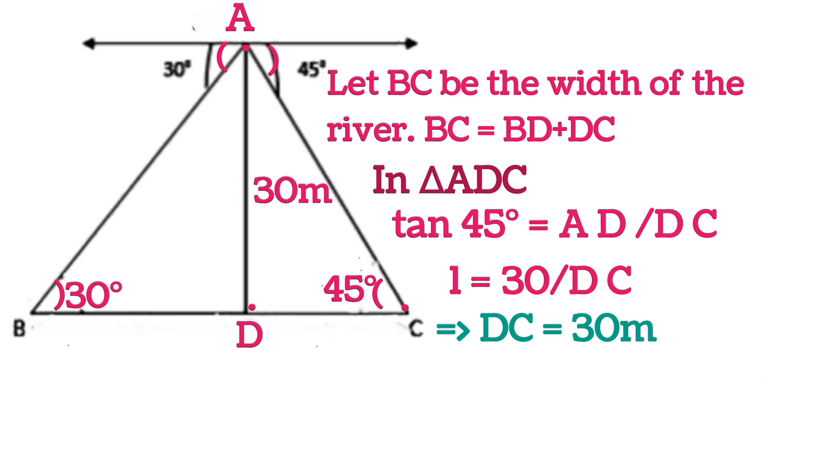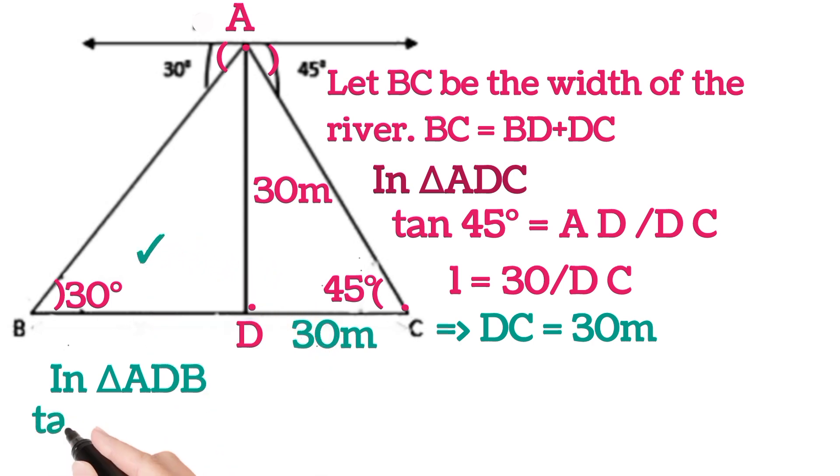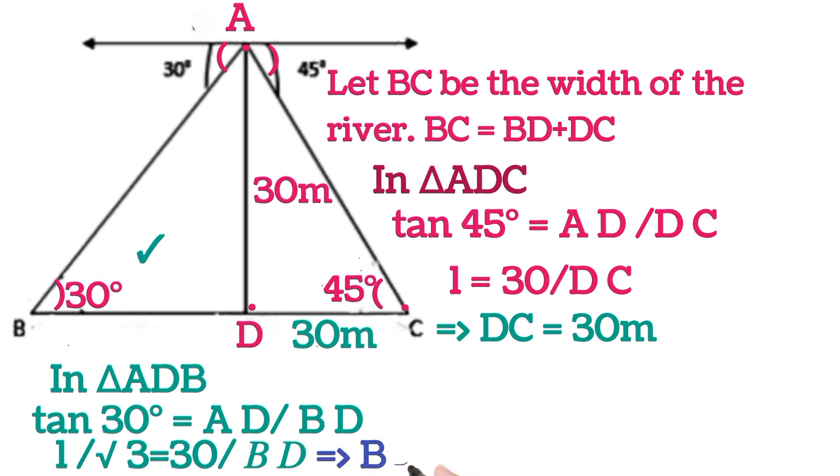So this is 30 meters. Now in triangle ADB, that is this triangle, so in this, tan 30 degrees will be equal to AD upon BD. Tan 30 degrees is 1 by root 3. AD is 30 divided by BD, which will give BD is equal to 30 root 3. So this is 30 root 3.